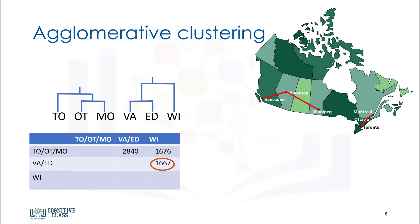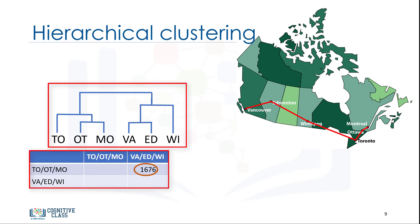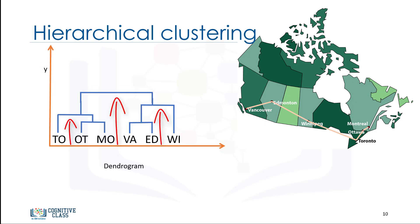In the same way, the agglomerative algorithm proceeds by merging clusters, and we repeat it until all clusters are merged and the tree becomes complete — meaning until all cities are clustered into a single cluster of size 6. Hierarchical clustering is typically visualized as a dendrogram, as shown on this slide. Each merge is represented by a horizontal line. The Y-coordinate of the horizontal line is the similarity of the two clusters that were merged, where cities are viewed as singleton clusters. By moving up from the bottom layer to the top node, a dendrogram allows us to reconstruct the history of merges that resulted in the depicted clustering.